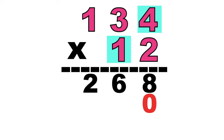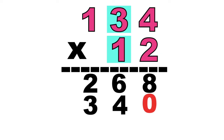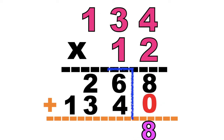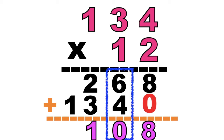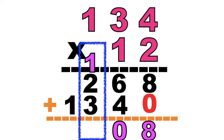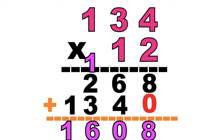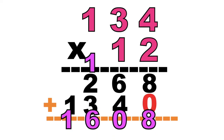So let's have 1 times 4 equals? Good job, children. It's 4. How about 1 times 3? That is 3. How about 1 times 1? Fantastic! It's 1. We can now add the partial products. 8 plus 0 equals? Good job! It's 8. How about 6 plus 4 equals? That's correct! It's 10. Carry 1. Let's have 1 plus 2 plus 3 equals? Very good, children. It's 6. Then bring down 1. So the product of 134 and 12 is 1,608.